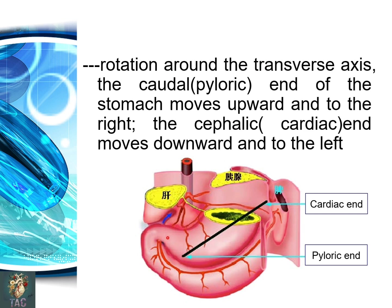Similarly, rotation around the horizontal or transverse axis causes the lower or caudal end to move upwards and to the right. These are the two different rotations of the stomach.